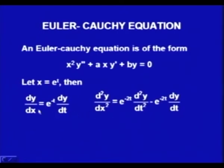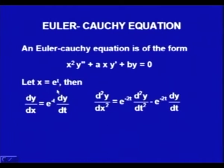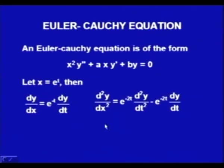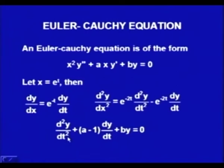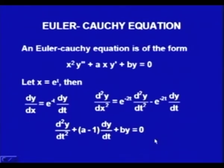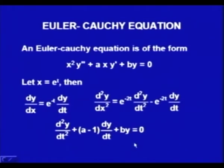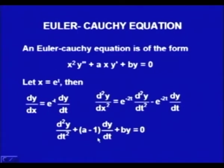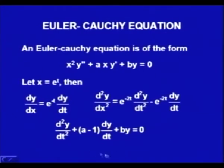The second derivative d²y/dx² = e^{-2t}(d²y/dt² − dy/dt). Substituting dy/dx and d²y/dx² along with x = e^t into the equation, we get: d²y/dt² + (a−1) dy/dt + by = 0. This is a second order linear differential equation where the coefficients (a−1) and b are both constants.